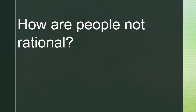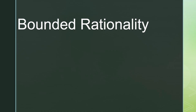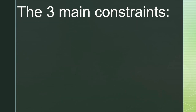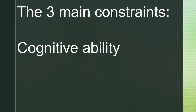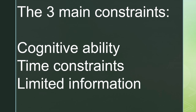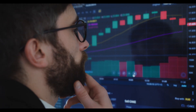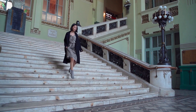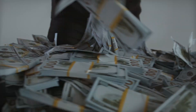So, how are people not rational? In 1957, Herbert Simon proposed the idea of bounded rationality — that consumers have factors limiting their ability to make the optimal choice. The three main factors are cognitive ability (people just aren't smart enough), time constraints, and limited information. If we don't have all the information we need, if we are in a hurry, or if we don't have enough time to think things through.